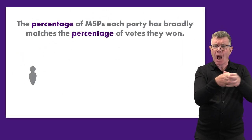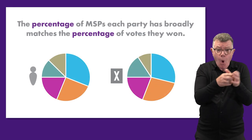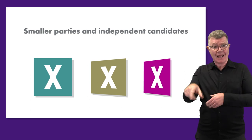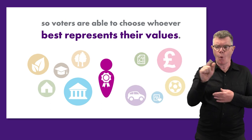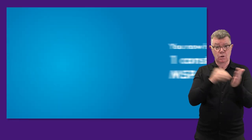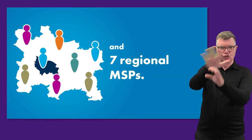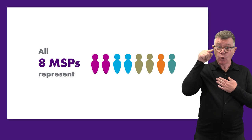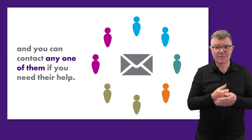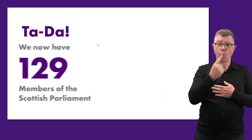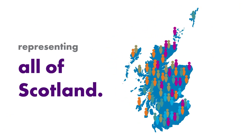The percentage of MSPs each party has broadly matches the percentage of votes they won. Smaller parties and independent candidates still have a chance to be elected, so voters are able to choose whoever best represents their values. You now have one constituency MSP and seven regional MSPs. All eight MSPs represent you, and you can contact any one of them if you need their help. We now have 129 members of the Scottish Parliament, representing all of Scotland.